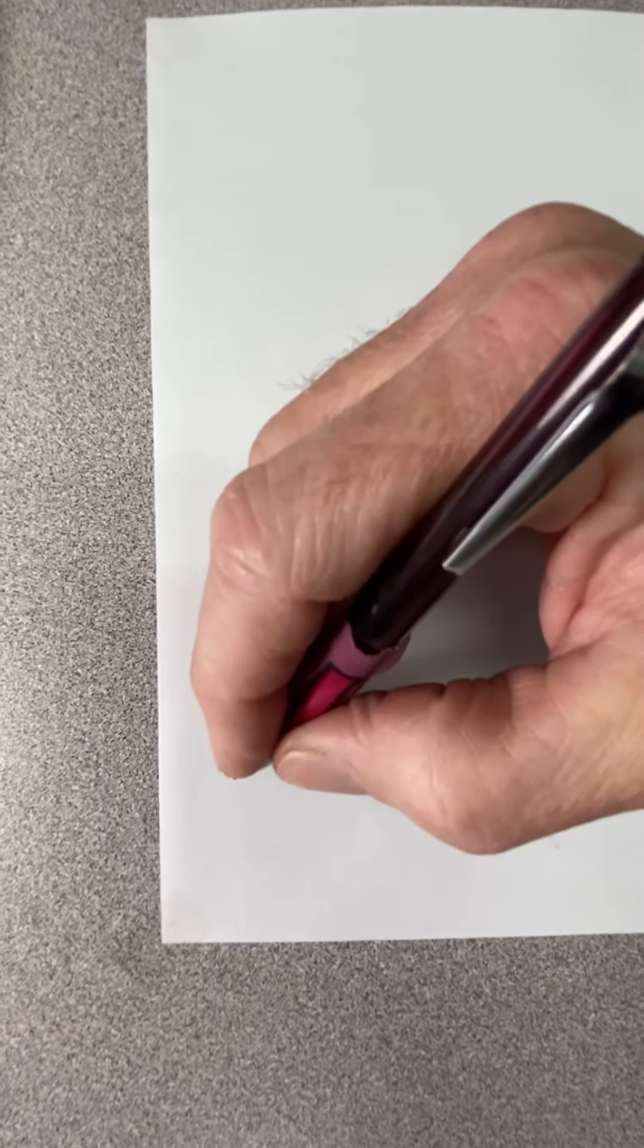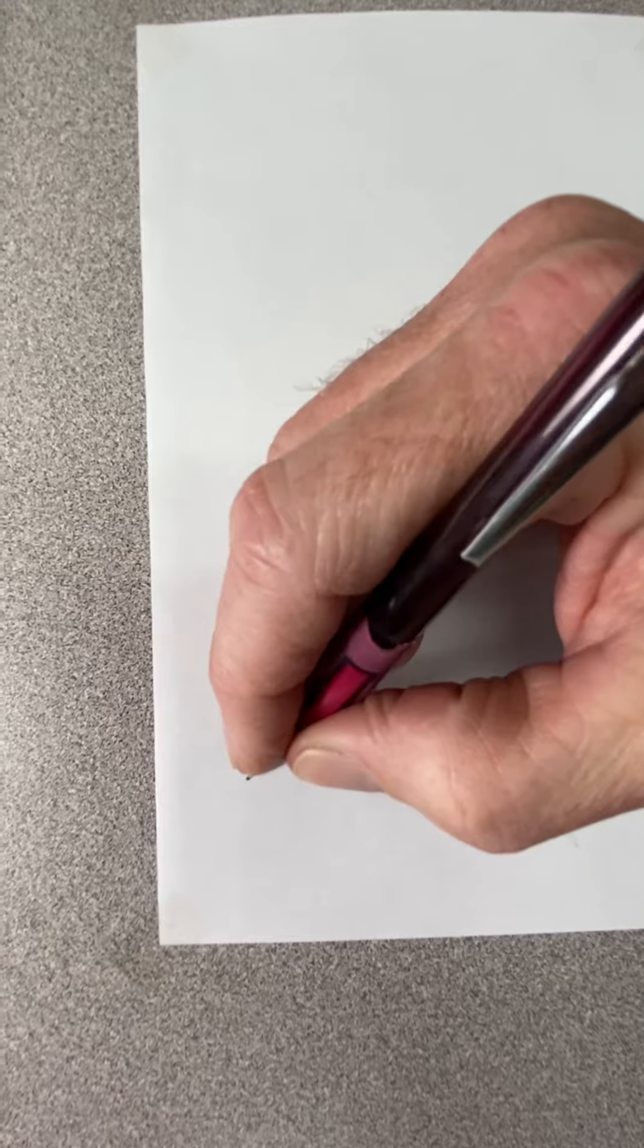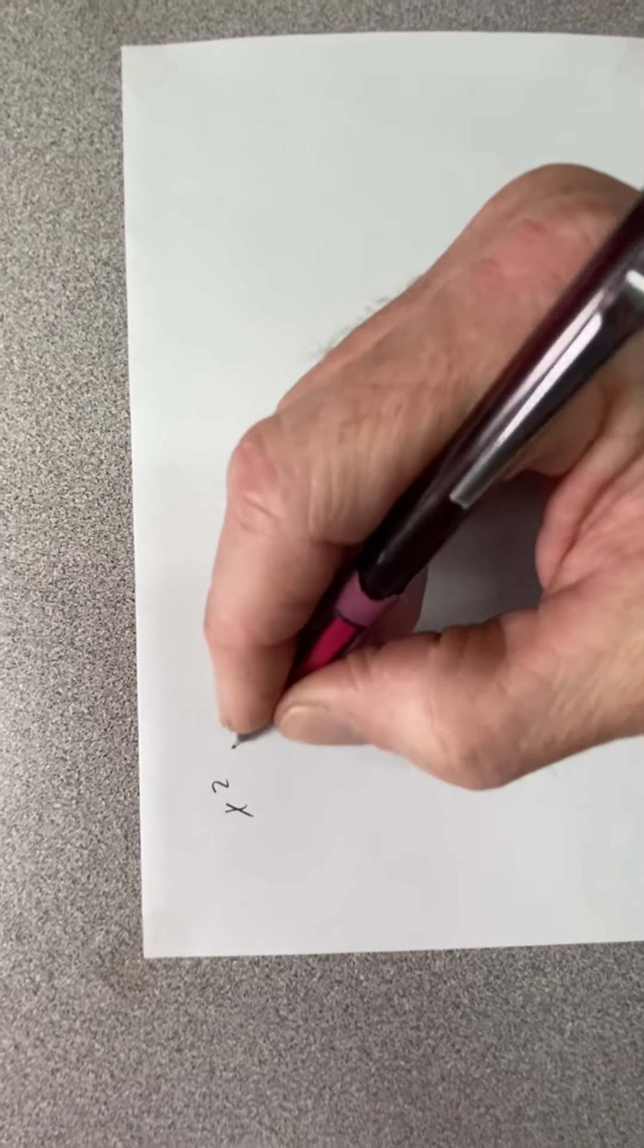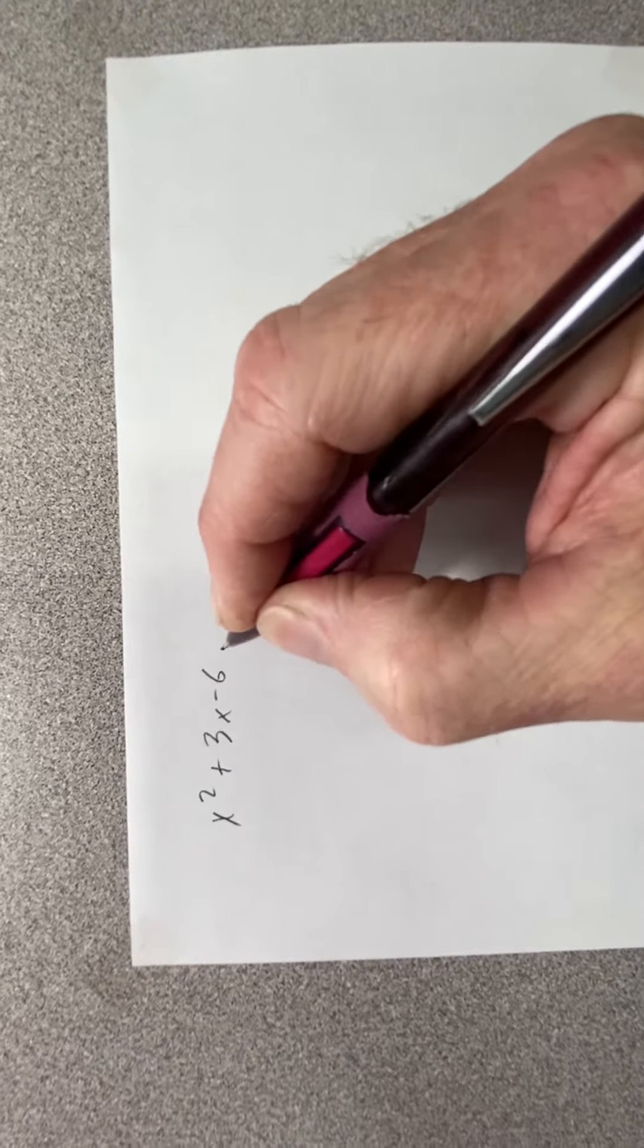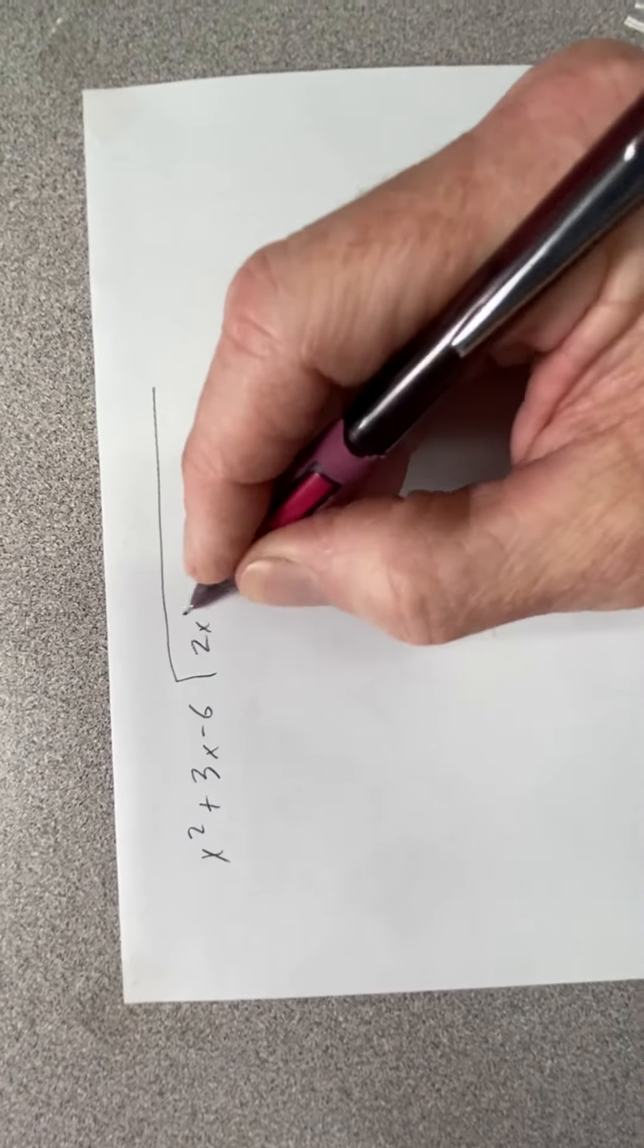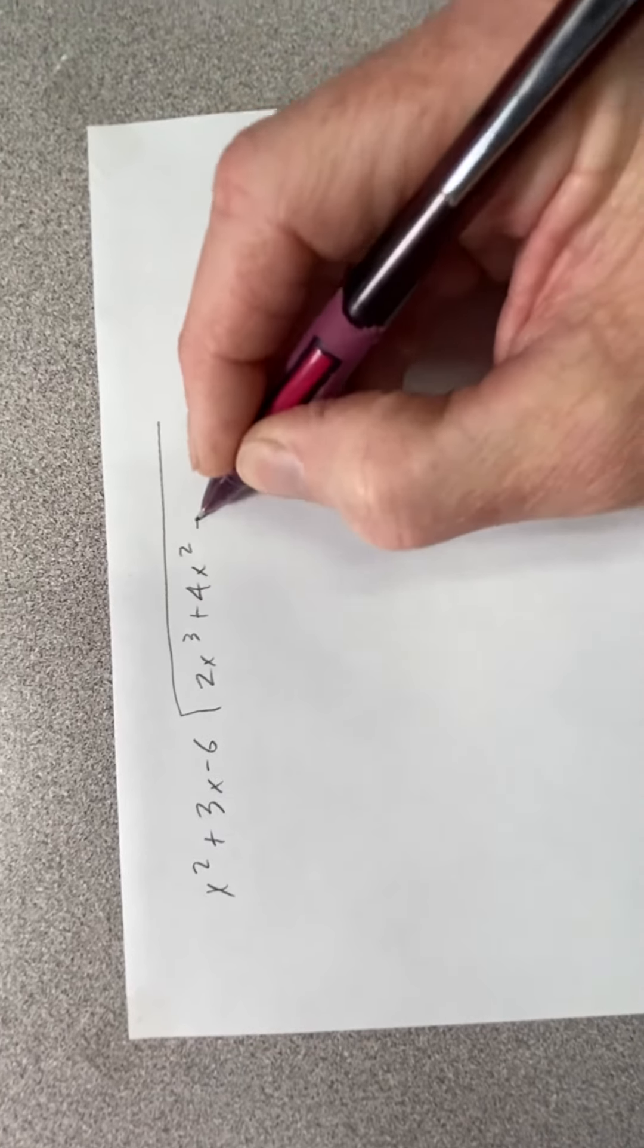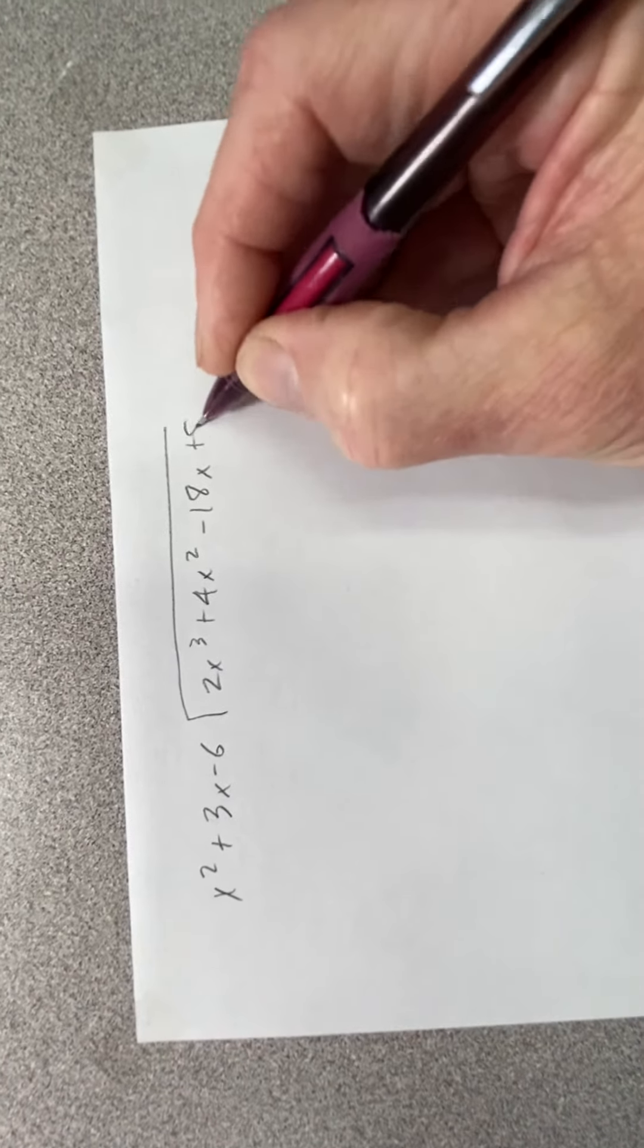All right, we're going to try this this way since I can't get the computer to work the way I want. I have an example problem: x squared plus 3x minus 6, divided into 2x cubed plus 4x squared minus 18x plus 8.